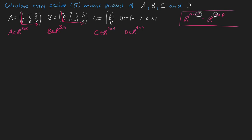Now we can use the rule to check which matrices can be multiplied. Starting with A, we need a matrix with 3 rows — that is only B, so we can multiply A×B. For B, we need a matrix with 4 rows — that is C, so B×C is valid. C can be multiplied with D, and D can also be multiplied with C. That gives us 4 multiplications, but we need 5, so the one we missed is A×A, since its columns and rows match.